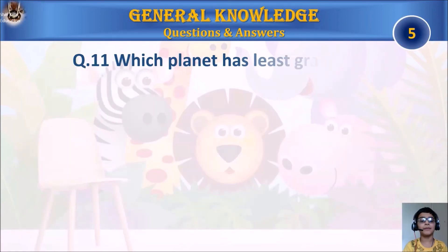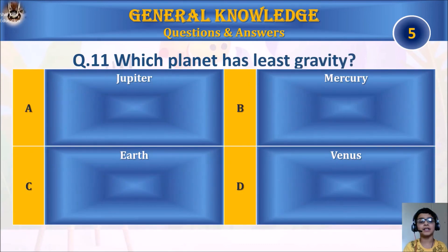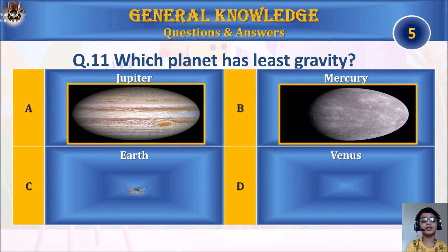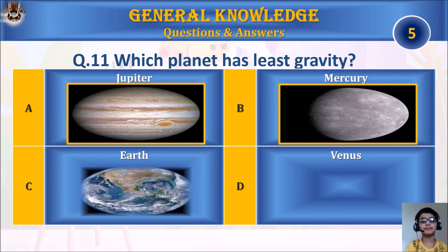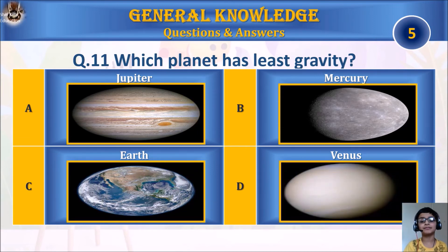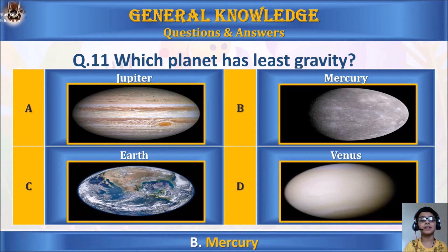Question 11: Which planet has the most moons? A. Jupiter, B. Mercury, C. Earth. Your time starts. The answer is B. Mercury.